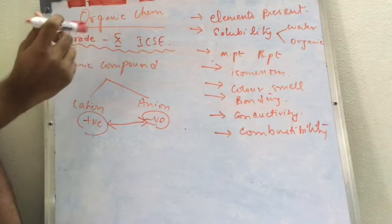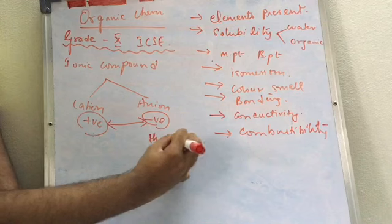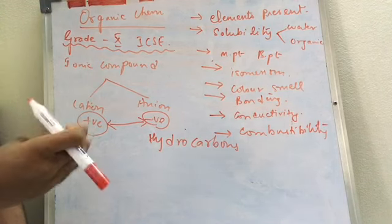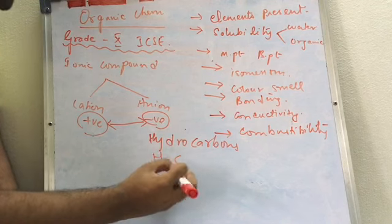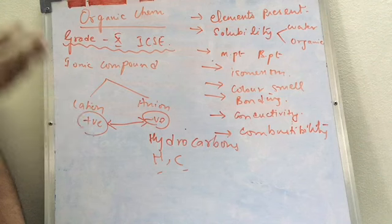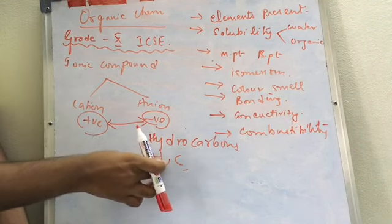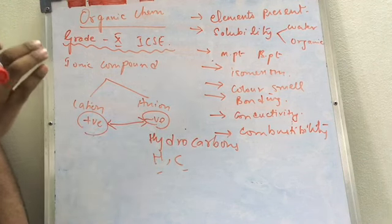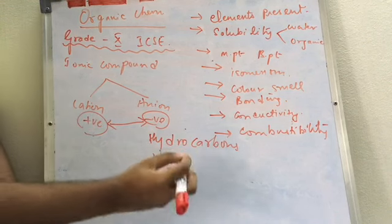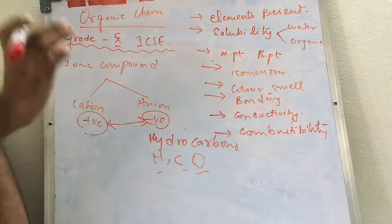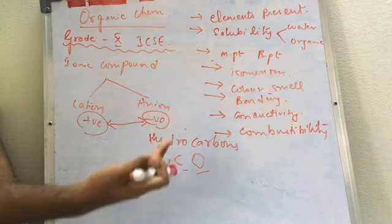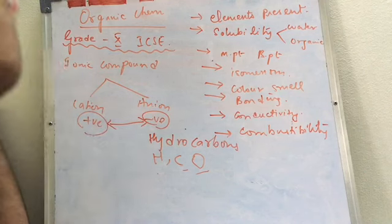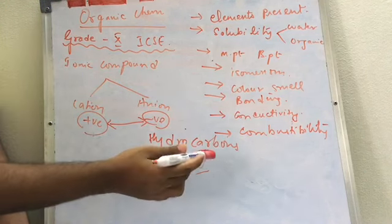When you take an organic compound, we generally use the word hydrocarbons to describe all organic compounds. A hydrocarbon is basically a compound with hydrogen and carbon as the main elements. In empirical formula questions, they give you the percentage of hydrogen and carbon, but these may not add up to 100%, meaning there is another element — oxygen — which is rarely found in a hydrocarbon. So the main elements of a hydrocarbon are hydrogen and carbon, and sometimes oxygen is also present.